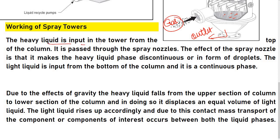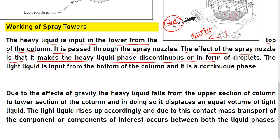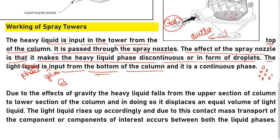The heavy liquid is input into the tower from the top of the column. It is passed through the spray nozzle. The effect of the spray nozzle is that it makes the heavy liquid phase discontinuous in the form of droplets. The light phase is given input from the bottom of the column and it is the continuous phase.